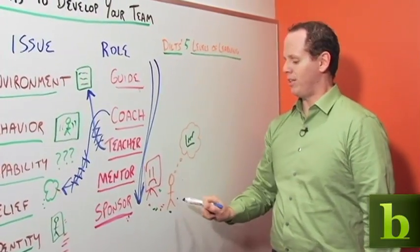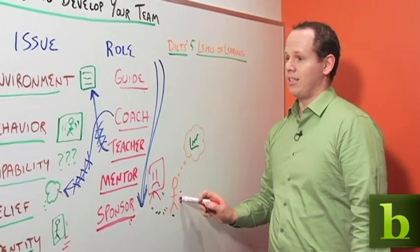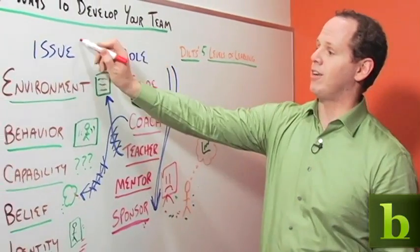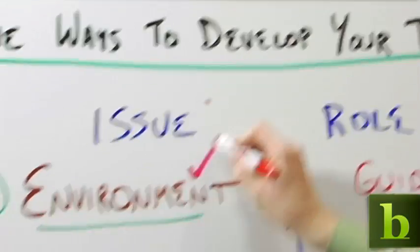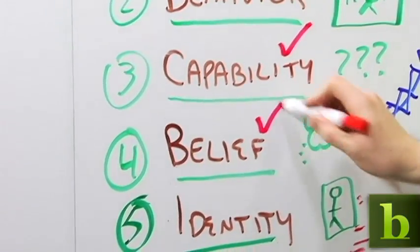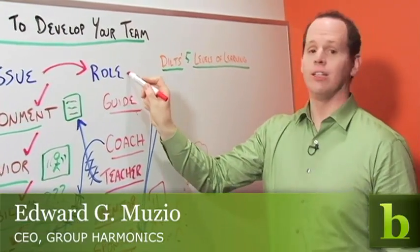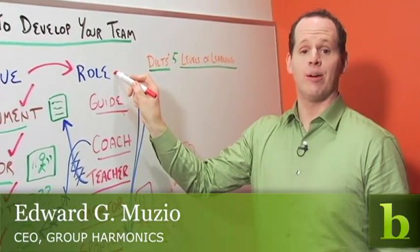So the next time you have an employee who needs to be developed, before you jump into action, take a few minutes and figure out what's going on. Figure out the issue. Is it environment, is it behavior, is it capability, is it belief, or is it identity? Let the issue drive the role you play and you'll be a lot more likely to take action that will help the employee develop.